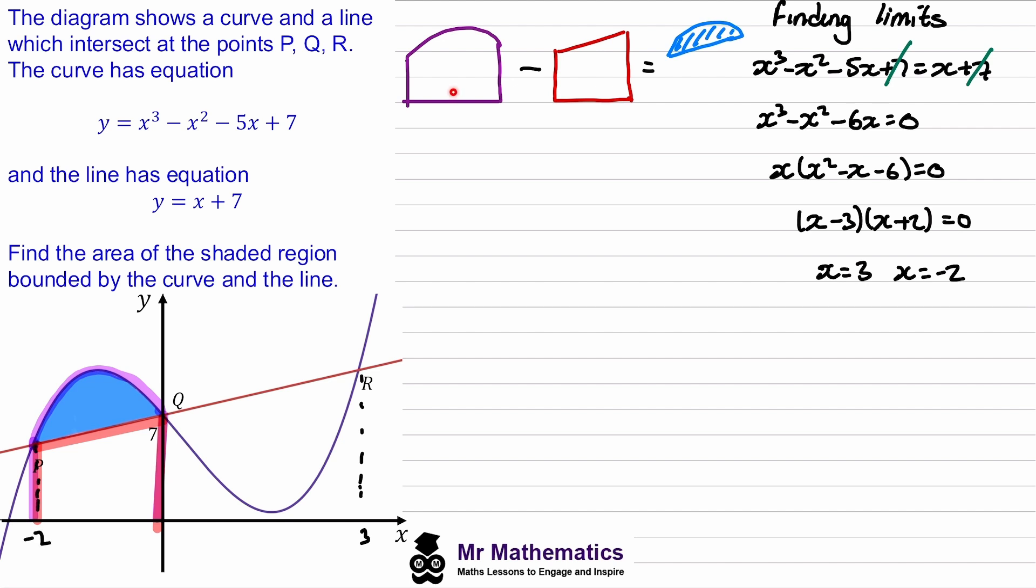Now we can write each of these areas as the definite integral between the limits of negative two and zero. And again, because they've got the same limits I can put these two integrals together.